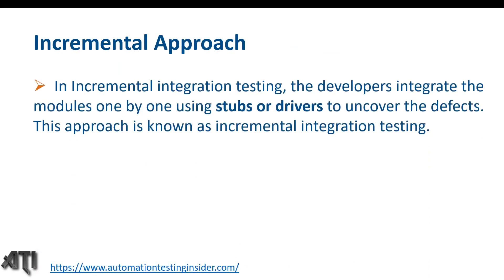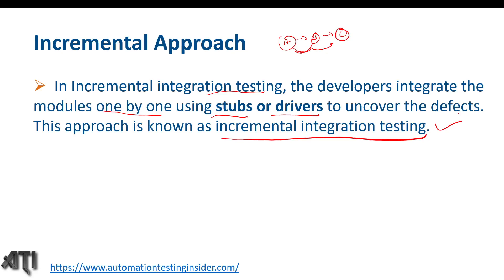In incremental integration testing, developers integrate modules one by one — we integrate Module A with B, then B with C, then C with the next module — incrementally adding modules using stubs and drivers. We will discuss what stubs and drivers mean. This approach of uncovering defects by integrating one module at a time is known as incremental integration testing.